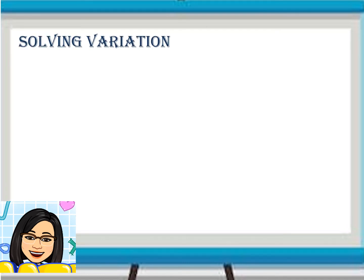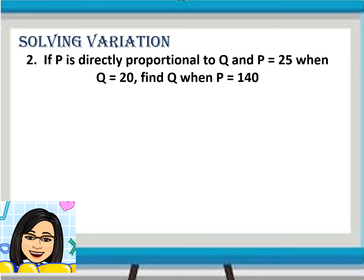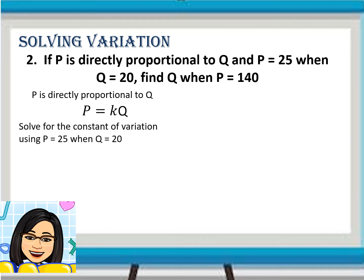Let us take a look at example number 2. If P is directly proportional to Q and P is equal to 25 when Q is equal to 20, find Q when P equals 140. Using the statement 'P is directly proportional to Q,' we can translate this to the symbol P is equal to KQ. Then, solve for the constant of variation using P equals 25 and Q equals 20.